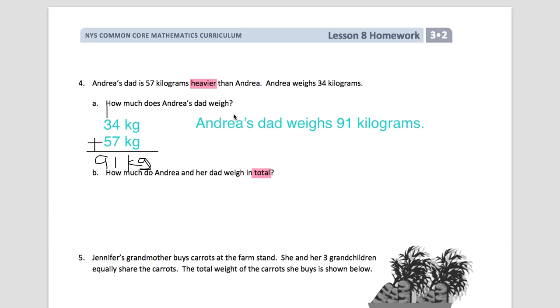Again, I'm going to add. So we're going to add 91 kilograms plus what Andrea weighs, 34 kilograms. Let's try that four again. We're going to add those numbers together. One plus four is five. Nine plus three is 12.